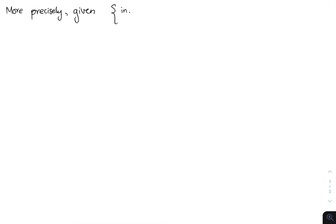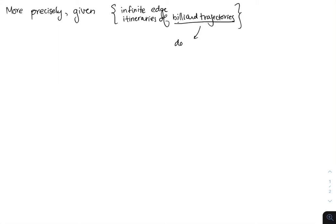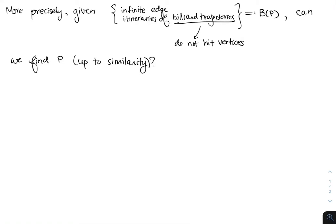More precisely, we're asking: if you're given the set of infinite edge itineraries of billiard trajectories — those bi-infinite sequences, infinite future and infinite past of labels of edges — and by billiard trajectories we mean trajectories of balls bouncing around in the polygon that do not hit vertices, there are no pockets. We call this set B of P, where P is the polygon, or the bounce spectrum of P.